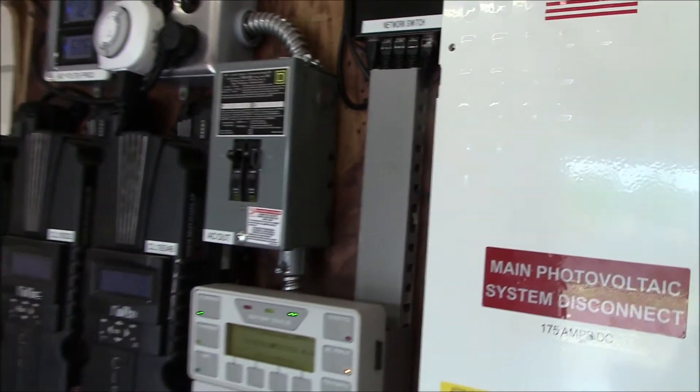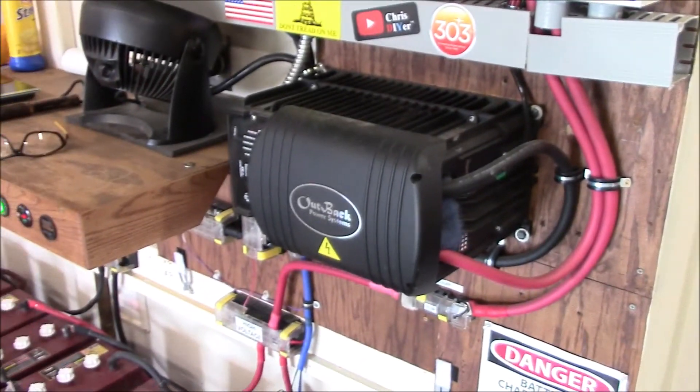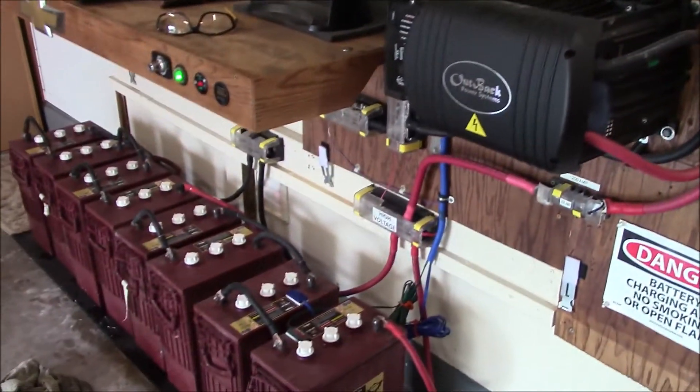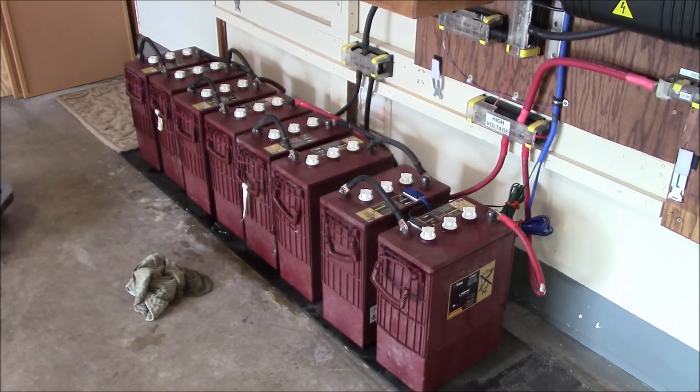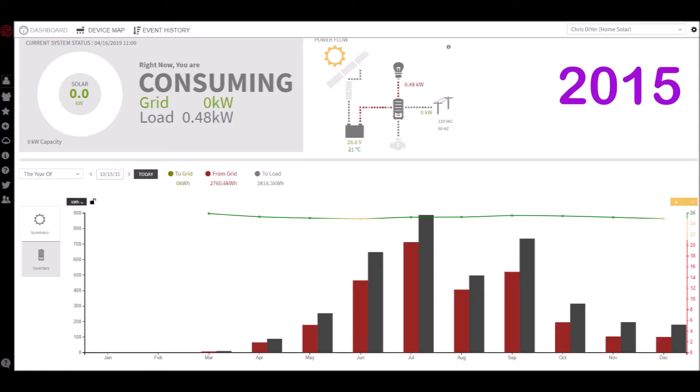My system is running. But the way it works is when the sun is up, I'm charging and using power. And then when the sun goes down, I'm not doing anything. I can't pull anything off those batteries.